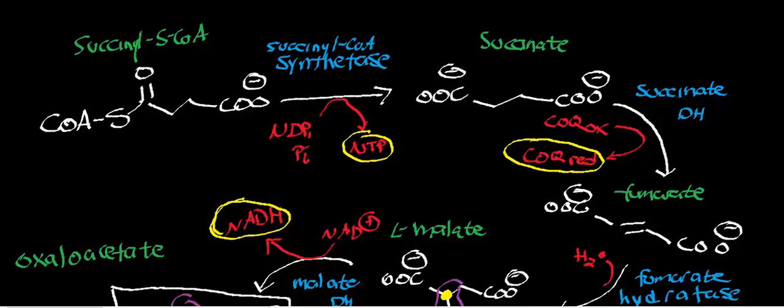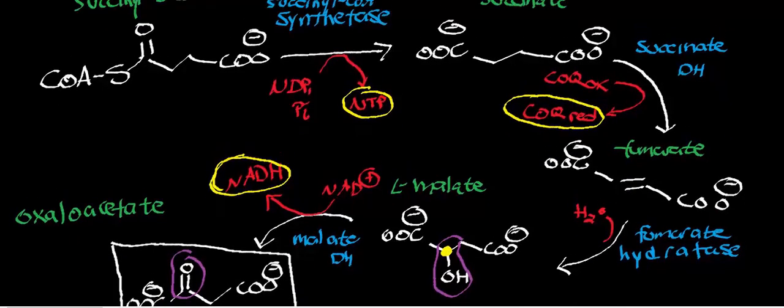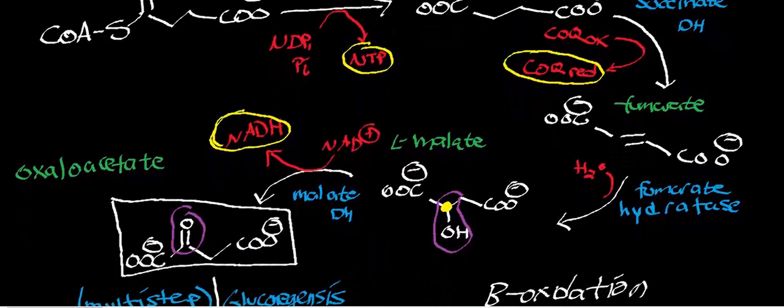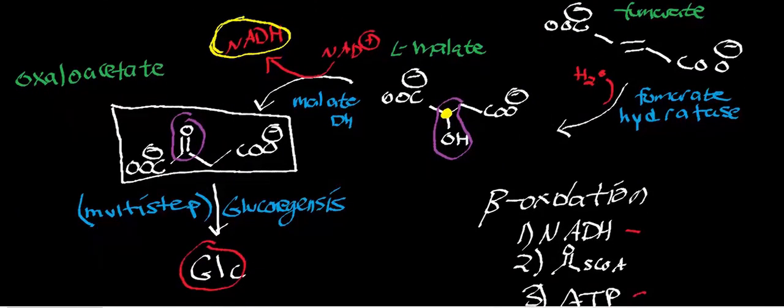The purpose of succinyl-CoA is to fuel the TCA cycle of the liver cell, ultimately making oxaloacetate for gluconeogenesis to produce glucose. Because threonine and methionine both produce succinyl-CoA, they are glucogenic. However, threonine also has another catabolic pathway that yields acetyl-CoA, so threonine is both ketogenic and glucogenic. Methionine, by contrast, only produces glucogenic products and is not ketogenic.